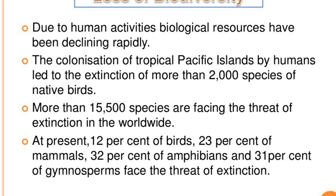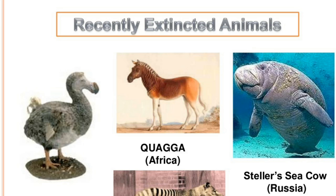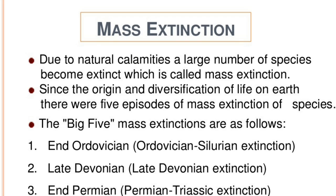Recently extinct animals include the dodo, the quagga — a giraffe-like animal found in Africa — and Steller's sea cow, found in Russia. Mass extinction due to natural calamities occurs when a large number of species become extinct, which is called mass extinction. Since the origin and diversification of life on earth, there were five episodes of mass extinction of species.